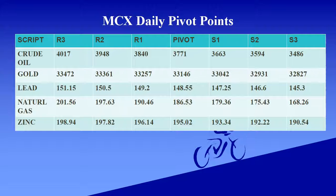Natural gas pivot level is 196. Support level ranges: 179 and 168. Resistance level ranges: 190 and 201.